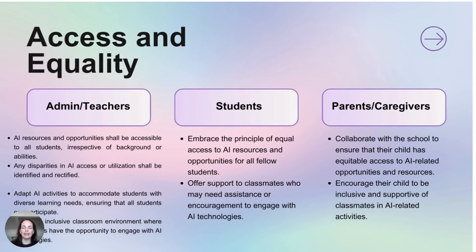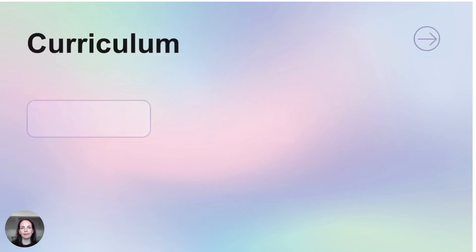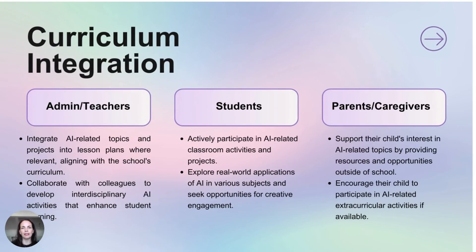Accessibility and equity is a really important factor. We're still working at making sure people have equal access to technology, and this is just another layer on top of that — it's going to affect admin, students, and parents and caregivers. So make sure you're outlining how you're going to effectively manage access and equality for all students. Curriculum integration also needs to be addressed: what is your school's take on how much AI is going to be integrated into the curriculum and assessment pieces, and that will need to be clearly articulated for teachers, students, and parents and caregivers.